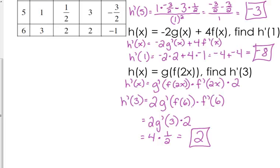Most people get hung up on this one with the composition: g prime of f of 6. You start with f of 6, which equals 3. Now it's g prime of 3 — we've got to go back and evaluate that from the table. That's the key step people miss — you have to evaluate the inner function first, then use that result as the input to the outer derivative.